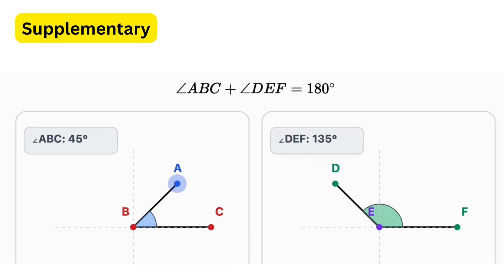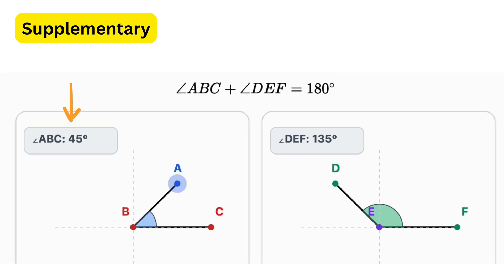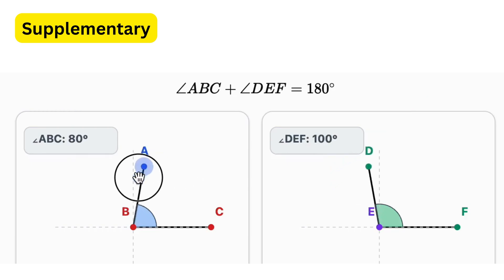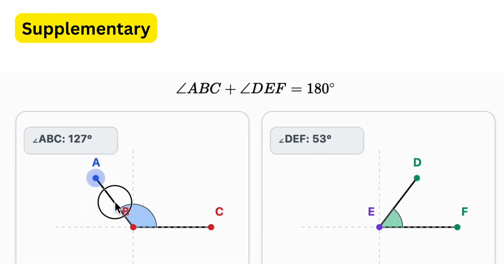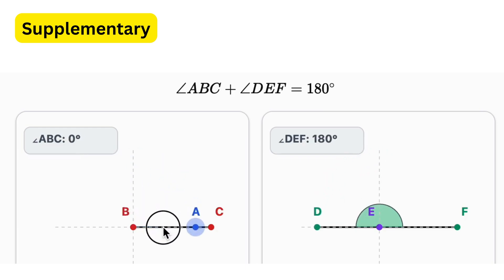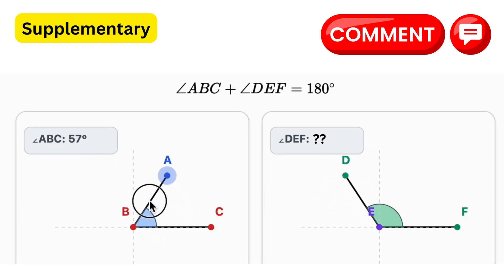Two angles are called supplementary if the sum of their angles is 180 degrees — meaning when you add both angles together they make a straight line. So if one angle is 45 degrees, the other must be 135 degrees so that they are supplementary. As soon as you change one, the other changes automatically such that the sum is always 180 degrees. Let me know in the comments what the value of angle theta will be if this angle is 70 degrees.